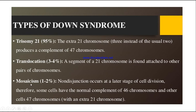The third type is mosaic Down syndrome, accounting for 1 to 2% of cases. Here, non-disjunction occurs at a later stage of cell division, so some cells will have the normal complement of 46 chromosomes while other cells will have 47 chromosomes with an extra 21st chromosome.